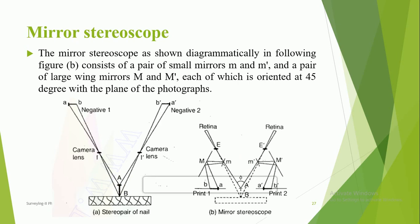Contact prints from the negatives are placed in the mirror stereoscope — print of negative 1 in one position, print of negative 2 in the other — with only the images of the nail drawn. The mirror stereoscope has four mirrors placed to transfer light to the eyes exactly as if it came from the nail, as shown by the dotted lines. The 3D image is obtained by overlapping both images on the retina, with eye positions at E and E-dash.